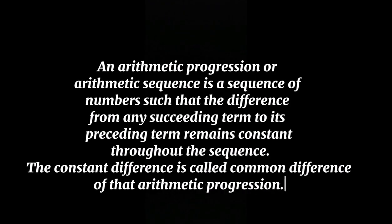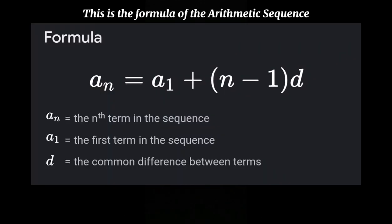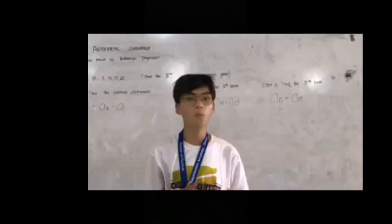An arithmetic progression or arithmetic sequence is a sequence of numbers such that the difference from any succeeding term to its preceding term remains constant throughout the sequence. The constant difference is called the common difference of that arithmetic progression. This is the formula of the arithmetic sequence.